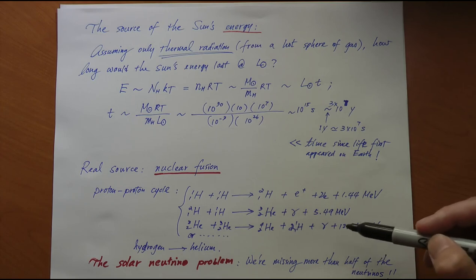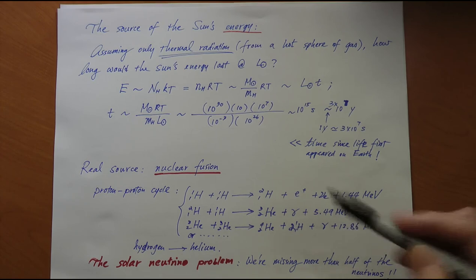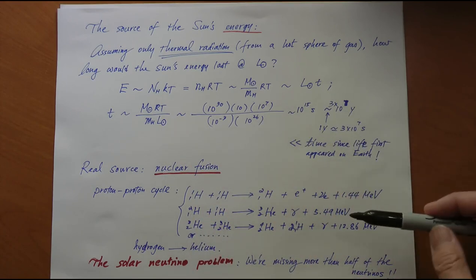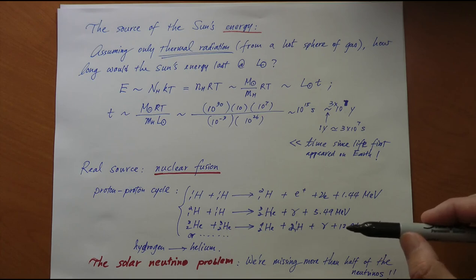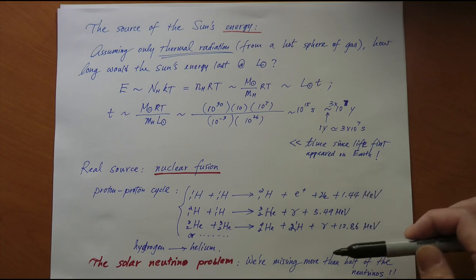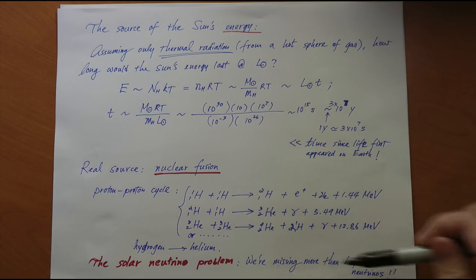We look for the number of neutrinos that we're supposed to be detecting from the sun in relationship with the power emitted from the sun. The greater the amount of power, the more neutrinos have to be emitted because the greater the rate of nuclear fusion. And here's the problem. When we calculated the neutrino production rate based on this model of proton-proton cycle...